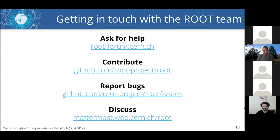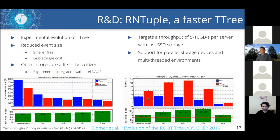In the Q&A, Doug asks about object stores being first-class citizens with RNTuple. RNTuple is an experimental feature in ROOT where the possibility of storing ROOT data in object stores is natively supported. The first experimental integration with Intel DAOS is still not available, but more updates will be shared when ready. A linked paper at the bottom of the slide provides further details.